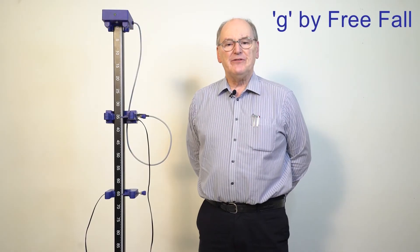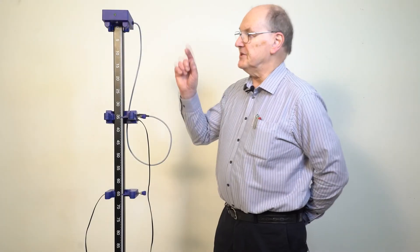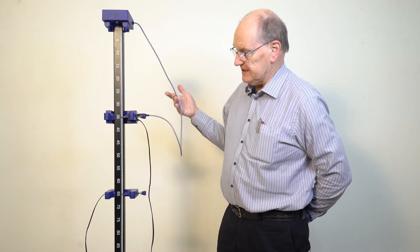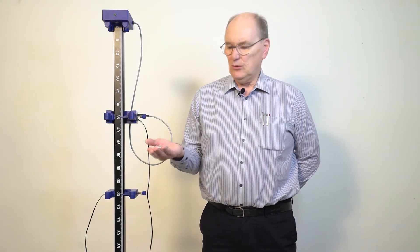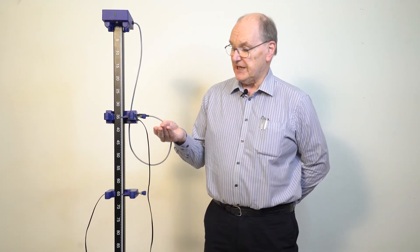The G by free fall apparatus provides alignment and precise positioning of the light gates. The solenoid at the top of the apparatus connects to the primary light gate. The solenoid holds and drops a steel ball or steel dowel through the two light gates.